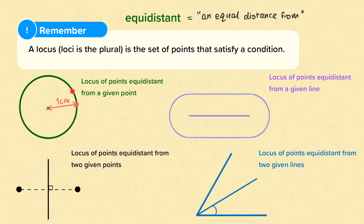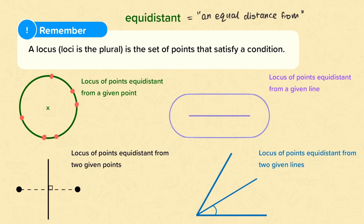I could have this point over here. I could have a point up here and over here that are all one centimetre away. The locus of all of these points would be this circle, because this circle would contain all of the points that are exactly one centimetre away from this point that I've been given.